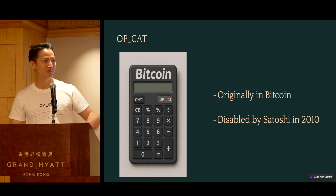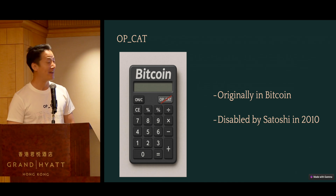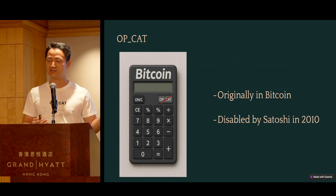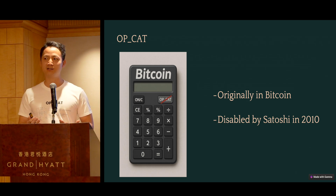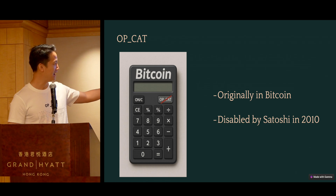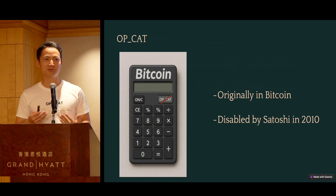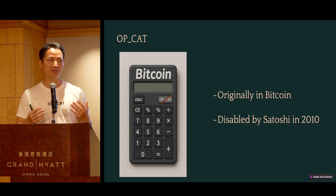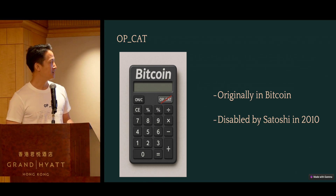Another way to look at Bitcoin Script — think about Bitcoin like a simple calculator, a hand calculator. You have different operations: you can add things, you can subtract things. The Bitcoin Script says: if you do all this computation and it ends up being one, then you are authorized to spend the coin; otherwise, you are rejected.